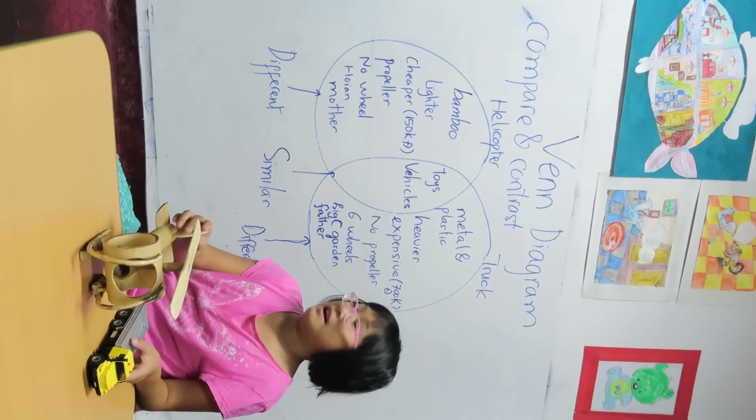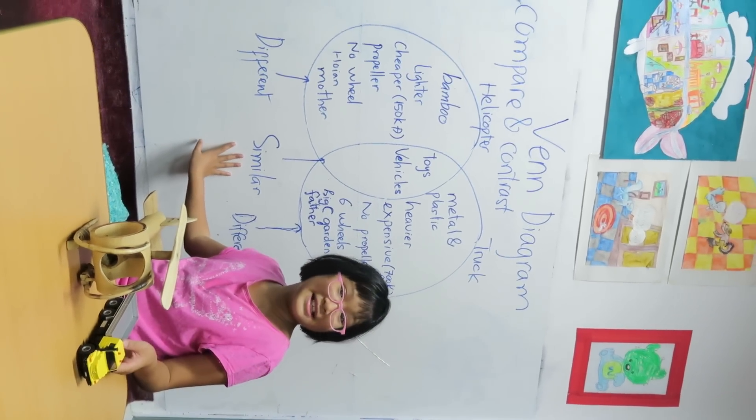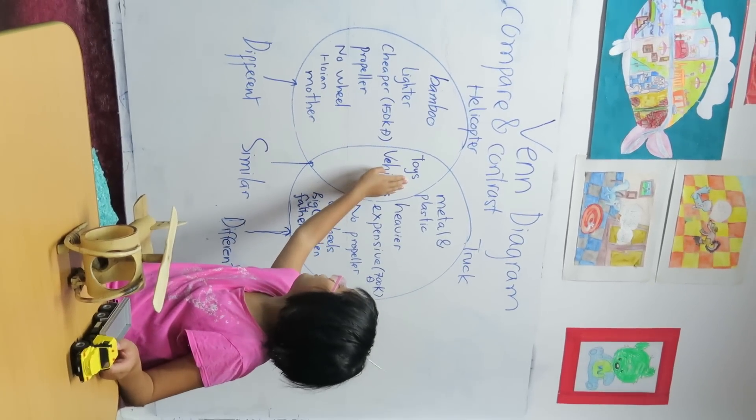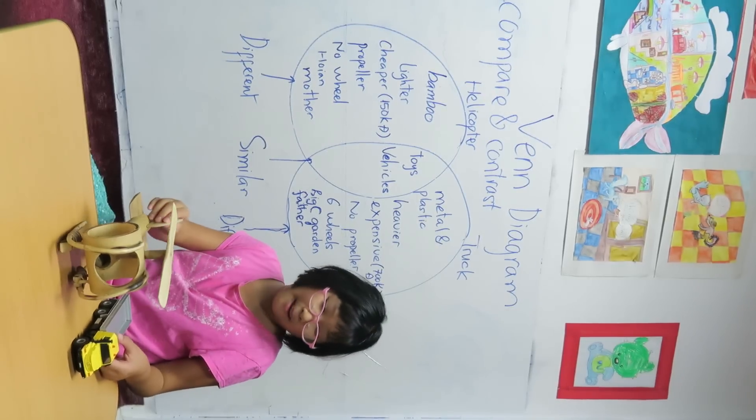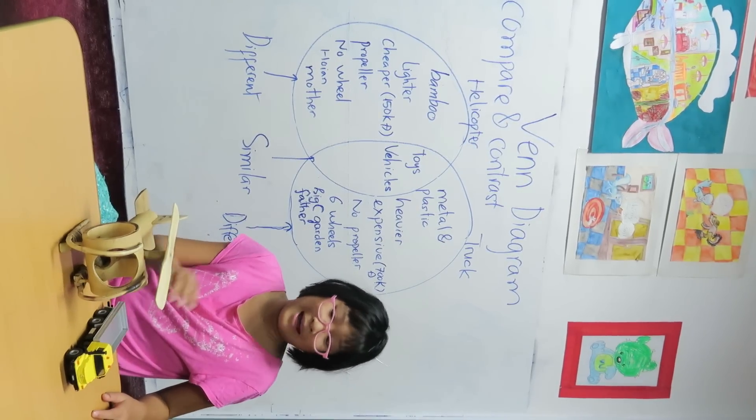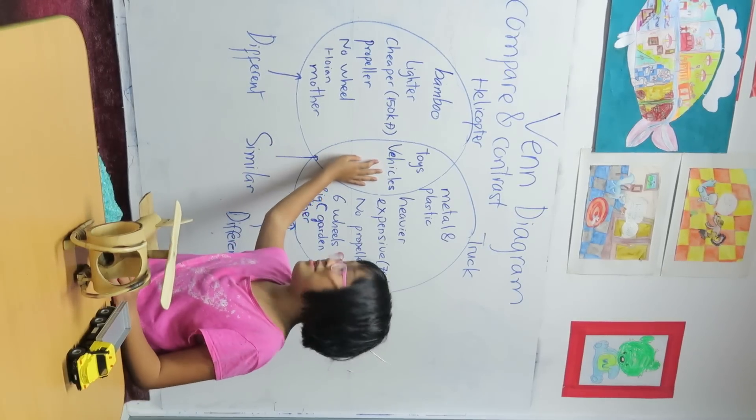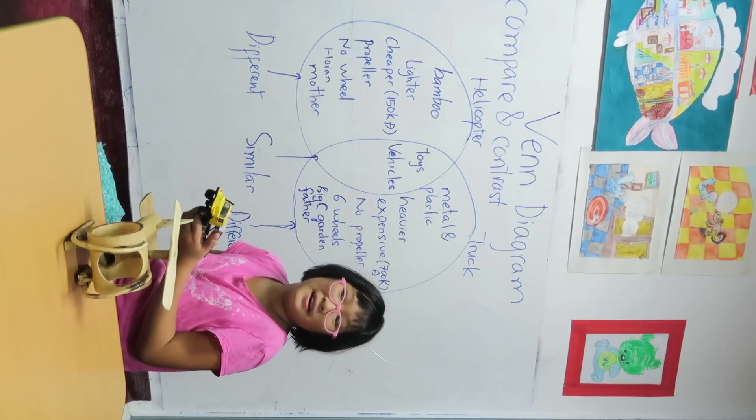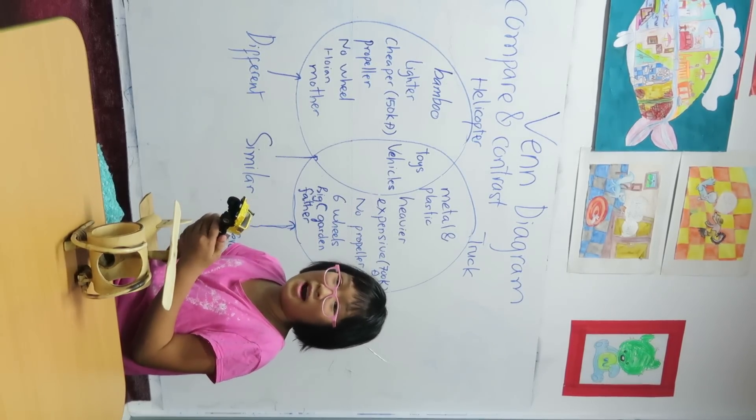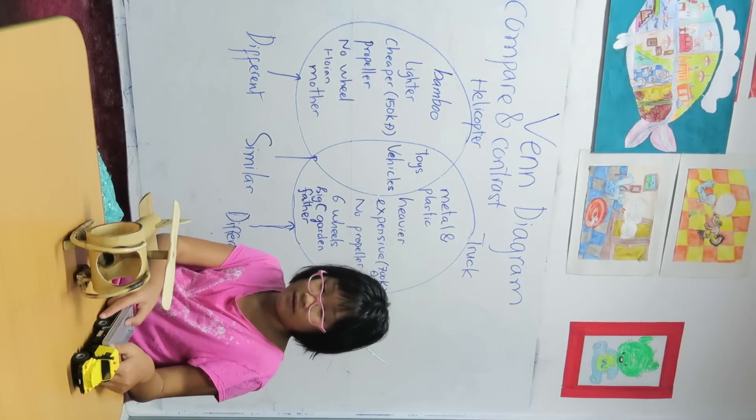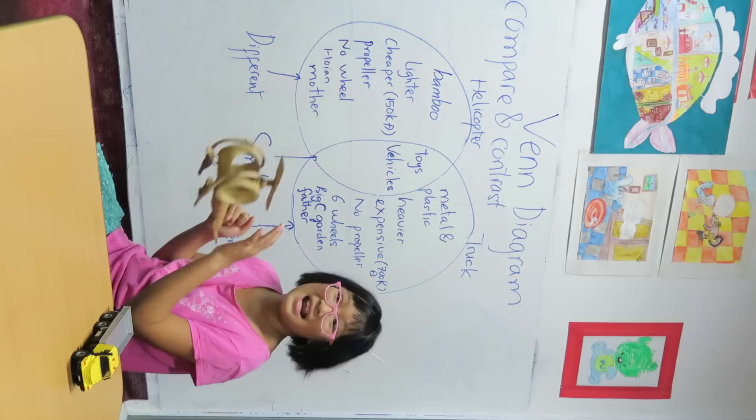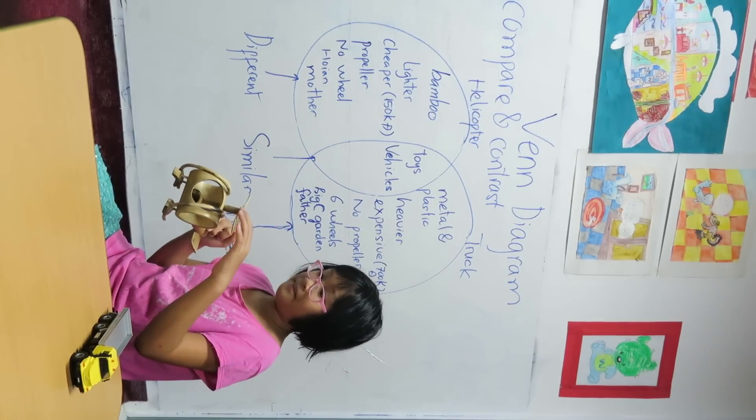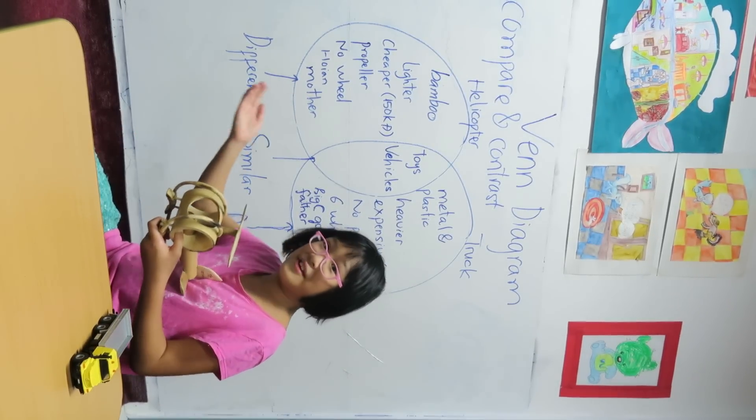Okay, now let's see the similarities. They are both toys. You can play with them. And they are both vehicles. This truck can carry goods from a farm to cities. And this helicopter can carry people from one place to another.